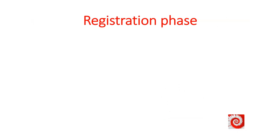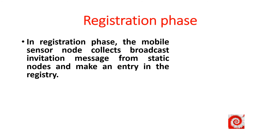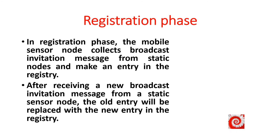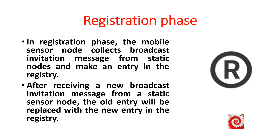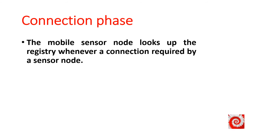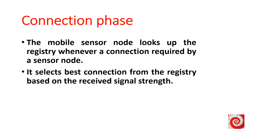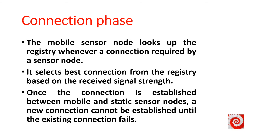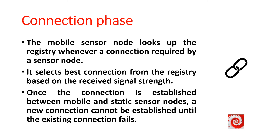In the registration phase, the mobile sensor node collects broadcast invitation messages from static nodes and makes an entry in the registry. After receiving a new broadcast invitation message from a static sensor node, the old entry will be replaced with the new entry in the registry. Following the registration phase, the connection phase starts. The mobile sensor node looks up the registry whenever a connection is required, and selects the best connection based on the received signal strength.